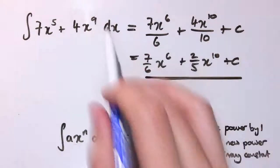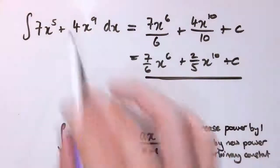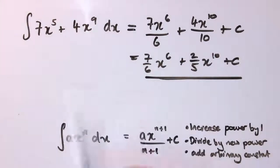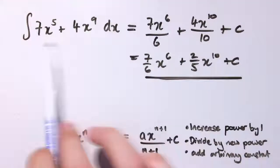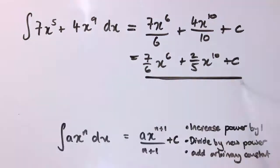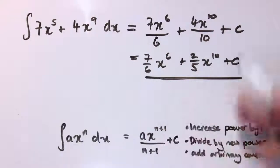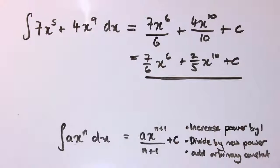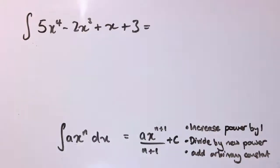Anything of this form will differentiate to give this, and if I also had some other information about the function, say which function has this gradient function and passes through a certain point, then I might also be able to work out c. But here we just use that plus c to represent the fact that that's a family of curves.